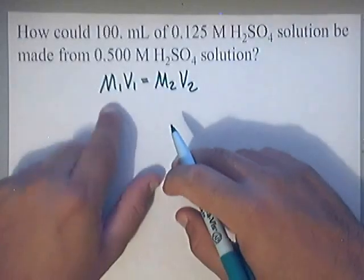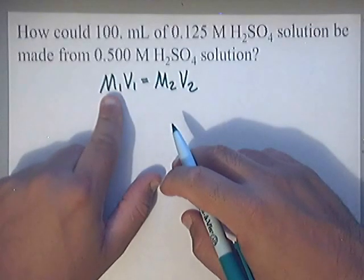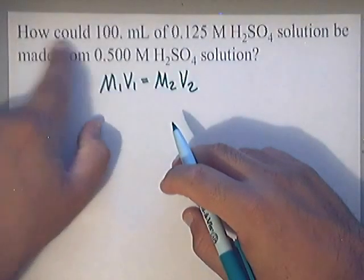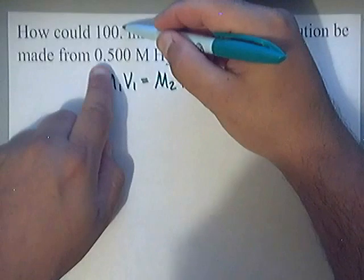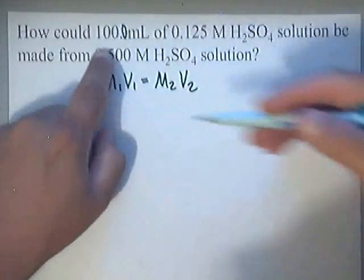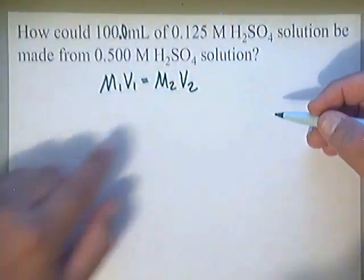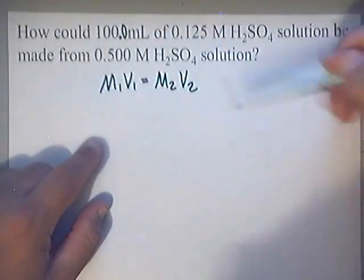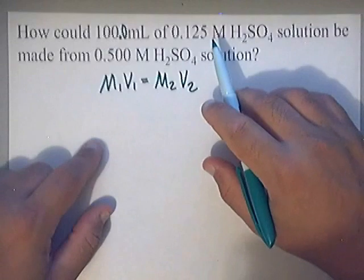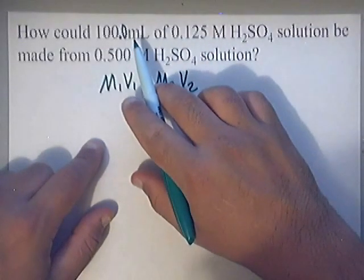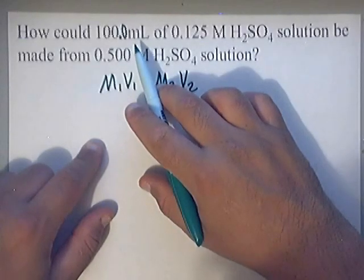I always assign the subscript '1' to the values first mentioned. The first volume mentioned is 100.0 milliliters — I believe they intended four significant figures — and the first concentration mentioned is M1. Some professors will tell you to convert milliliters to liters, but you really don't have to.